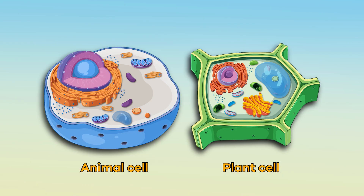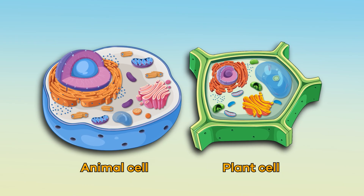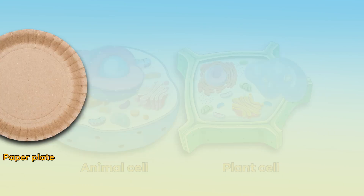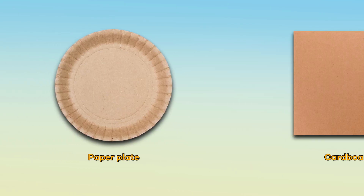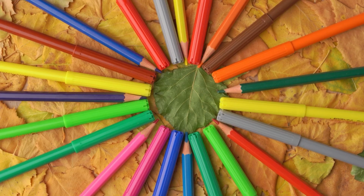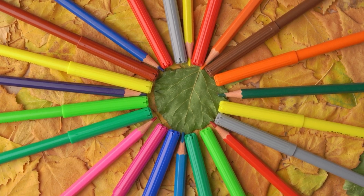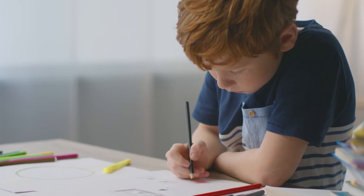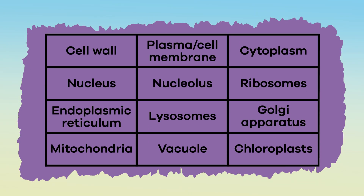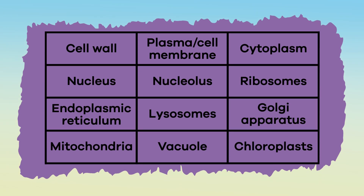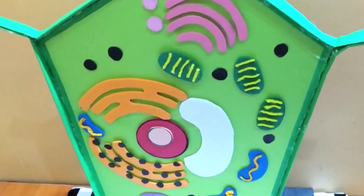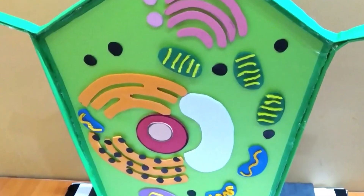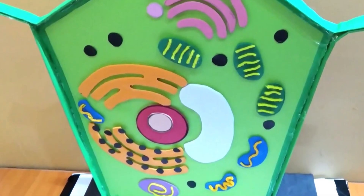Now it's time for you to create your own cell model. Use a paper plate or piece of cardboard with colored pencils or markers to draw all of the organelles in a plant cell. Here's a reminder of all the parts. After you are done, check out our DIY Plant Cell Model video to check your work.